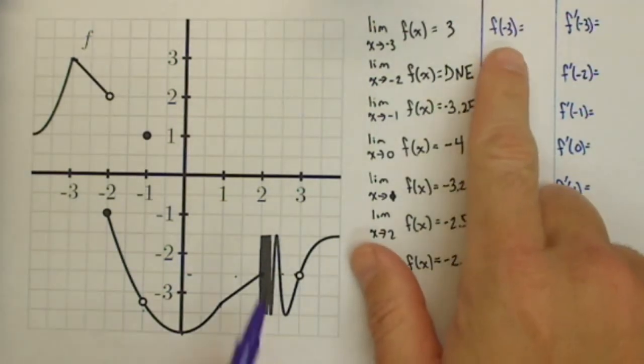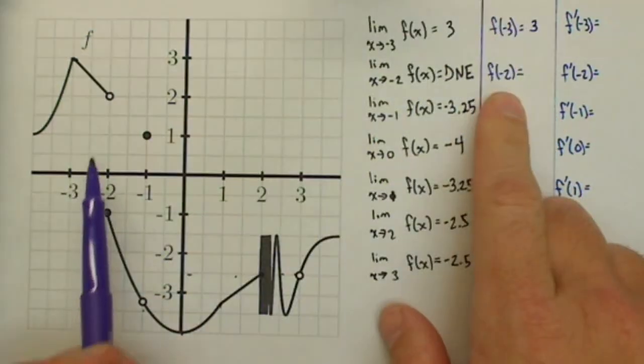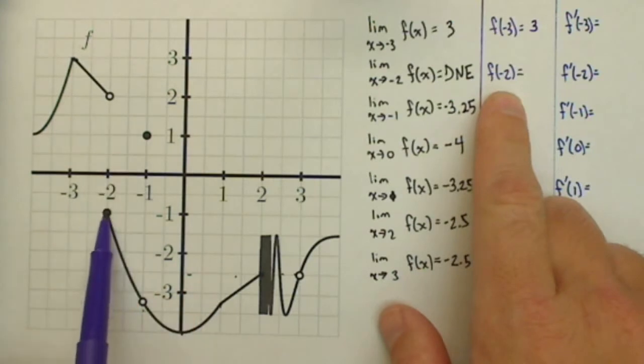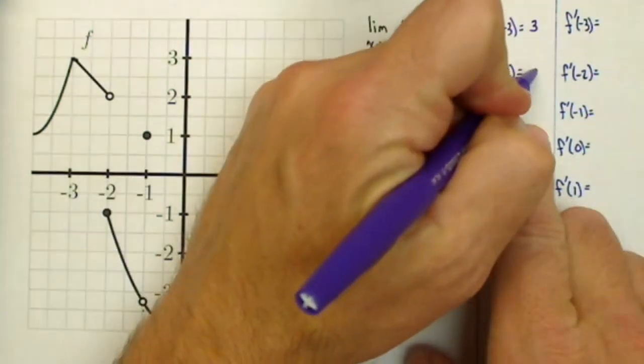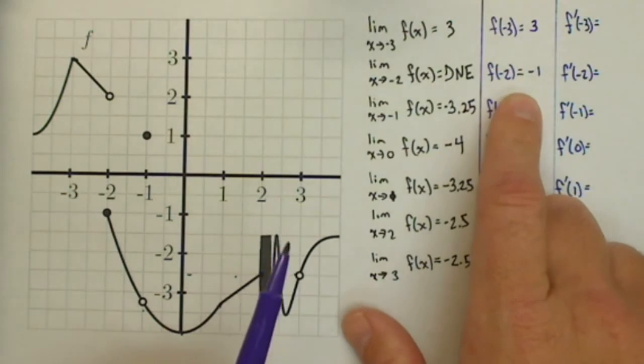Let's talk about the function values. f of negative 3, no problem, it's 3. f of negative 2, we look for the closed circle, f of negative 2 is negative 1. So even though the limit didn't exist, there's still a function value there at negative 2.